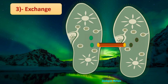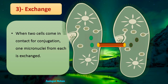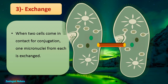Exchange: when two cells come into contact for conjugation, one micronucleus from each is exchanged. One, two, three, or several micronuclei may be exchanged depending upon the type of organism. They exchange the one copy that was made from each micronucleus through mitosis.